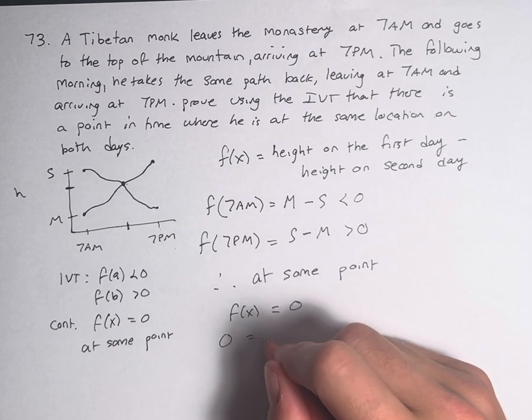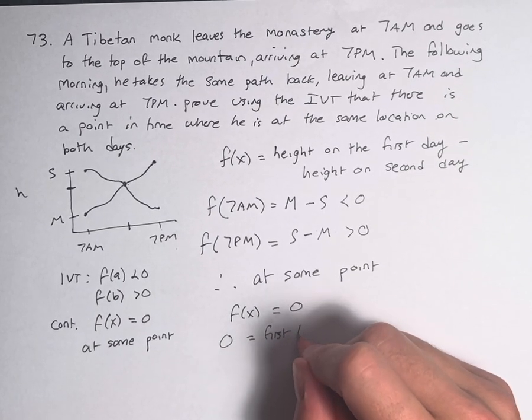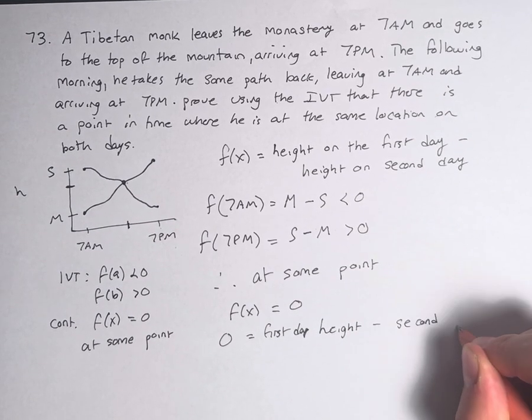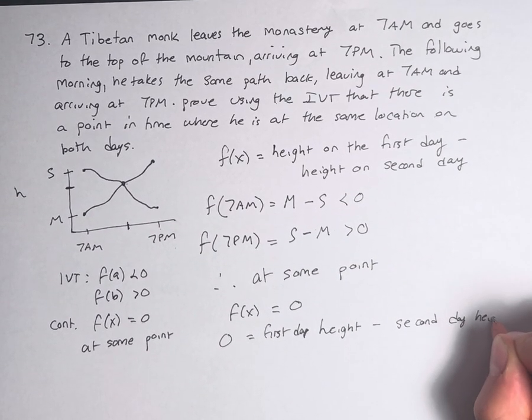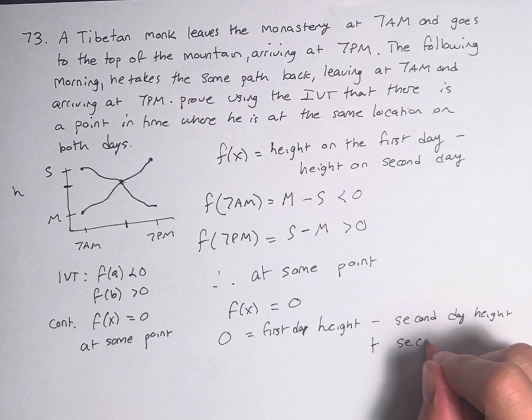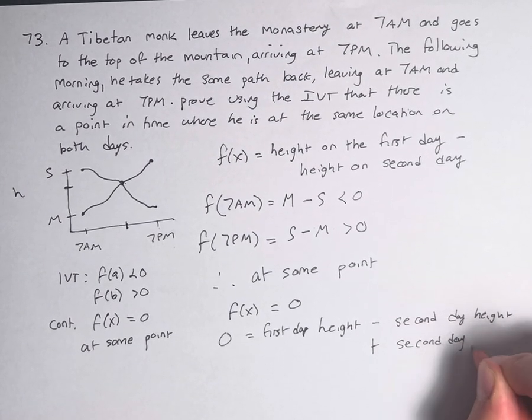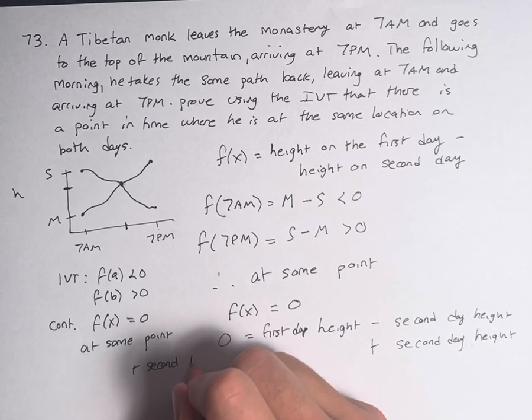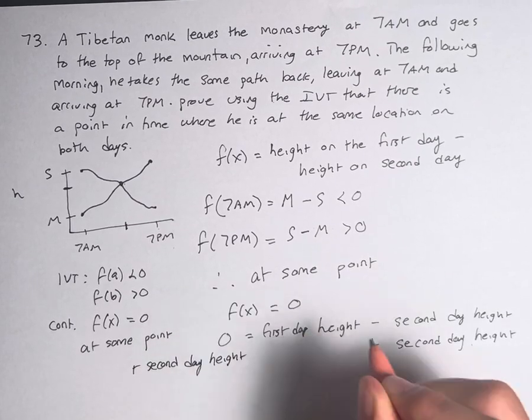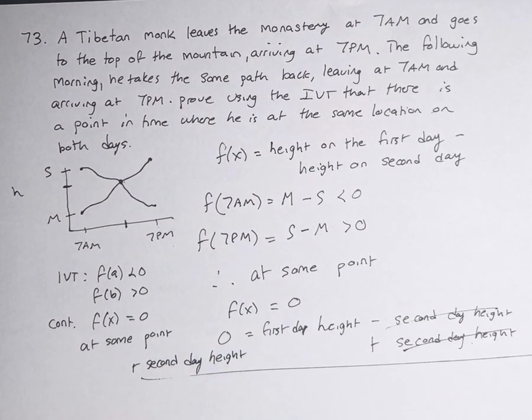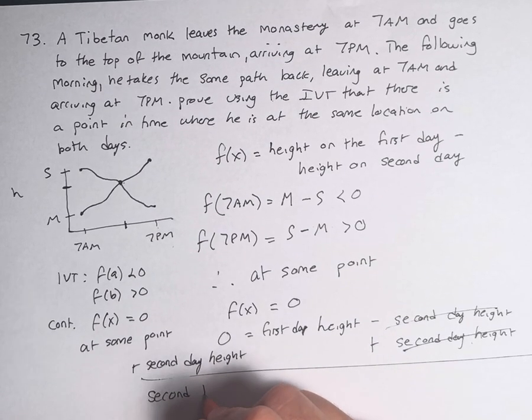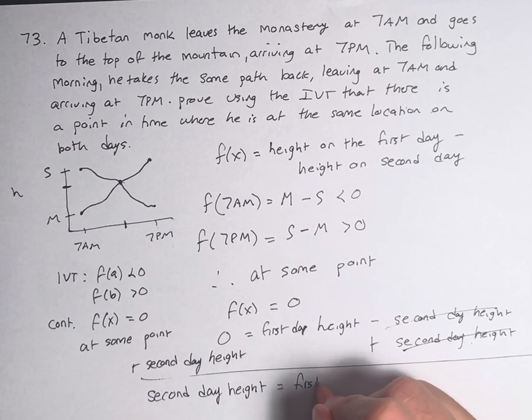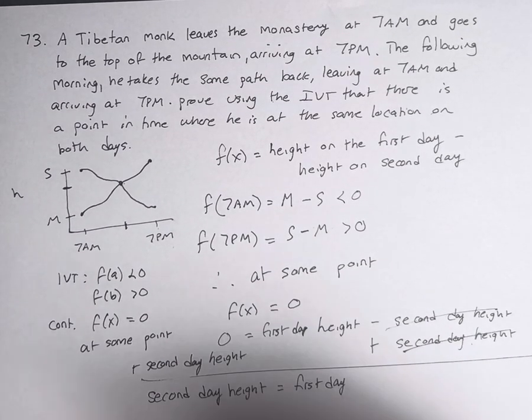Therefore, 0 is equal to the first day height minus the second day height. This equals 0. So if we add the second day height to both sides, this cancels. And we can see that at some point, we know that the height on the second day is equal to the height on the first day at some value x, at some time.